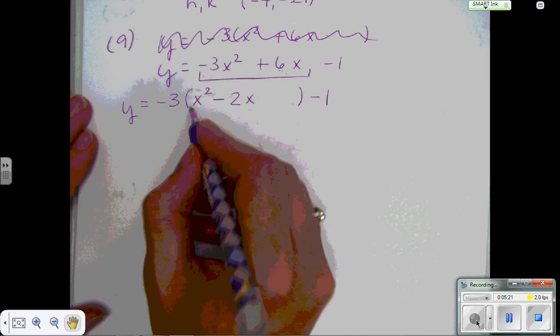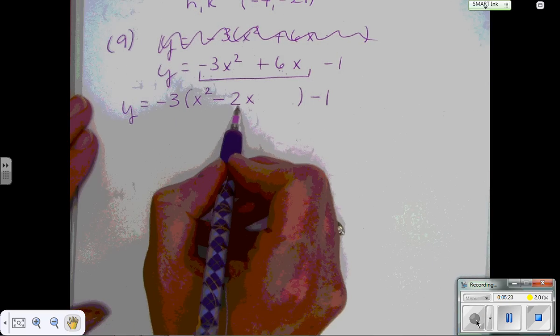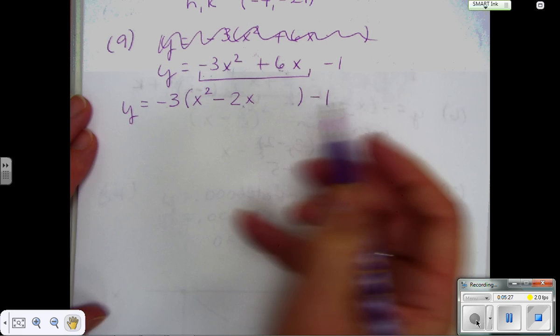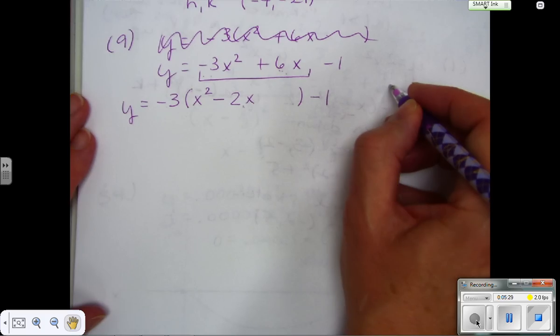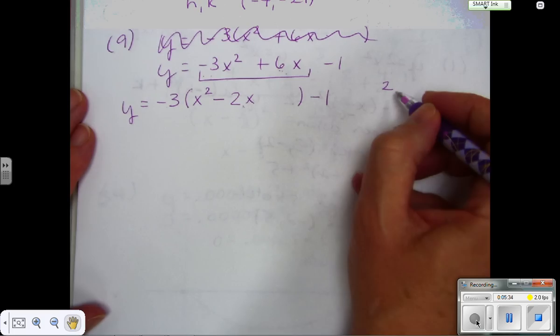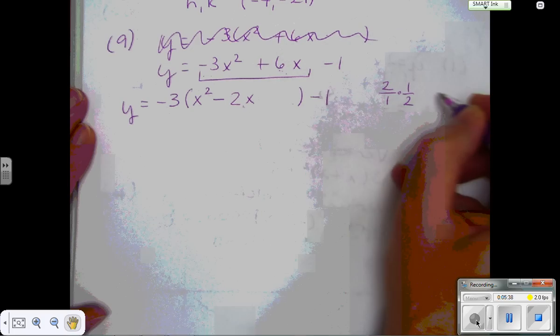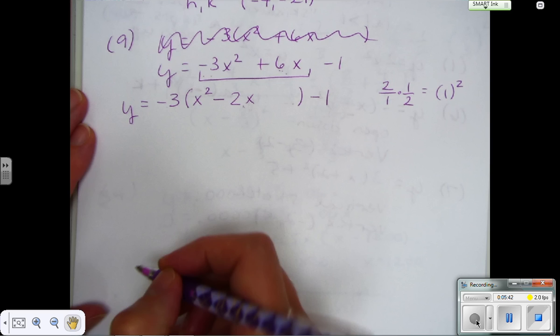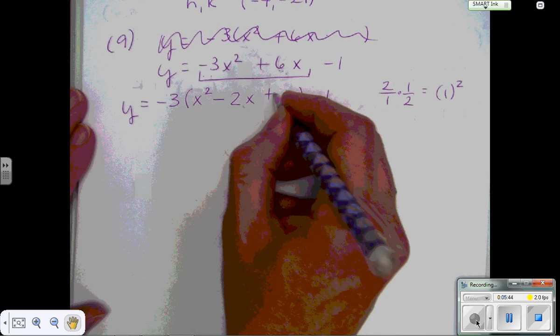Now I'm ready to complete the square with my quadratic and my linear. And I'm going to use this linear term that's inside the parentheses. Negative 2. You don't have to worry about the sign, remember, because you're going to square it. So I'm going to take the coefficient 2. You can multiply by half or divide by 2. It's the same thing. That's going to give me 1. And square that is 1. So I'm going to add 1 inside the parentheses.